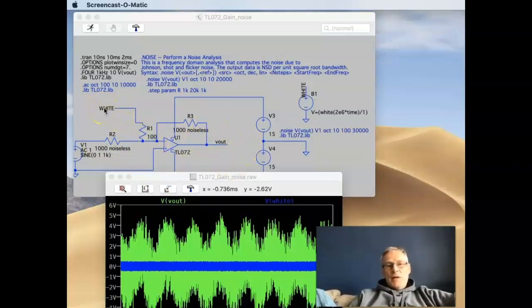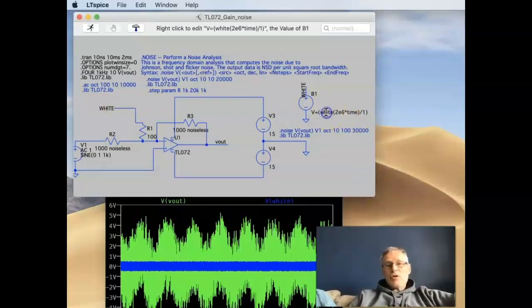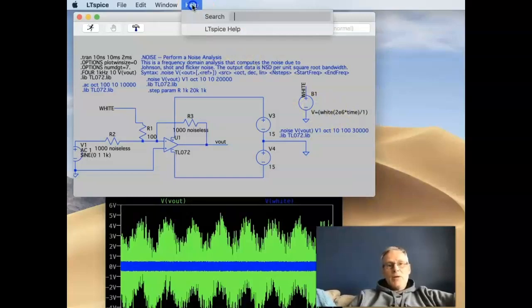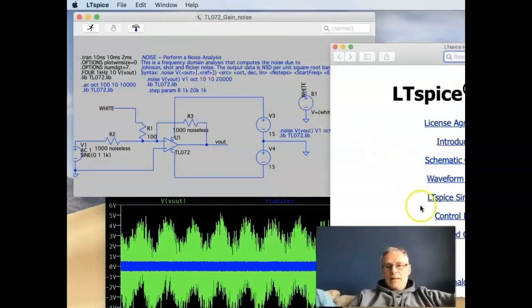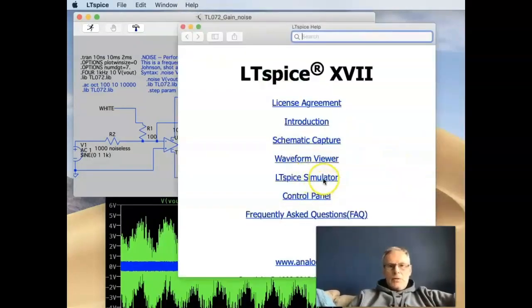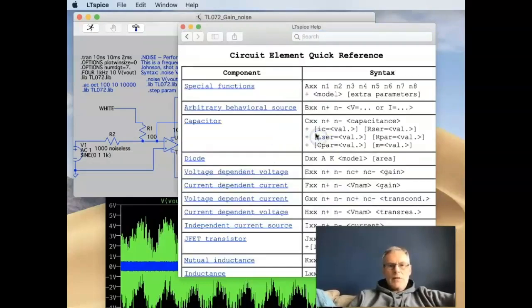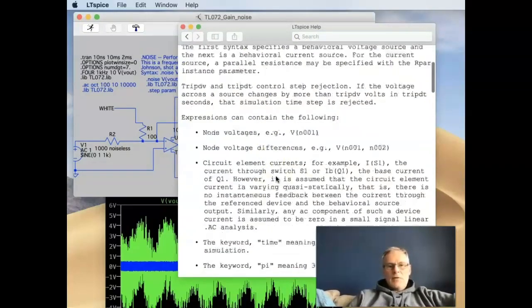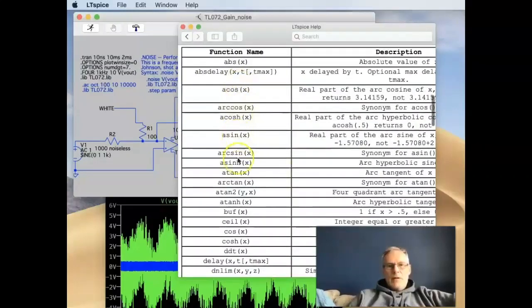You can change the frequency and the variation of your noise source. If you want to look at the available functions, then if you go into the help menu and you take a look at simulator circuit elements, if you look at the arbitrary behavioral source, you'll see that there are many, many functions that you could call upon.